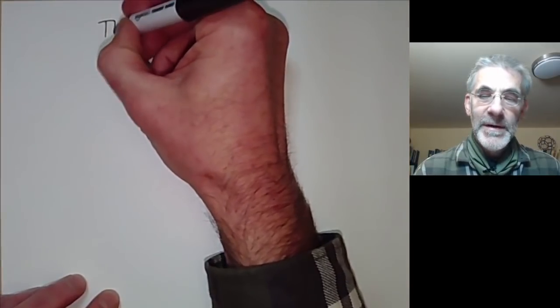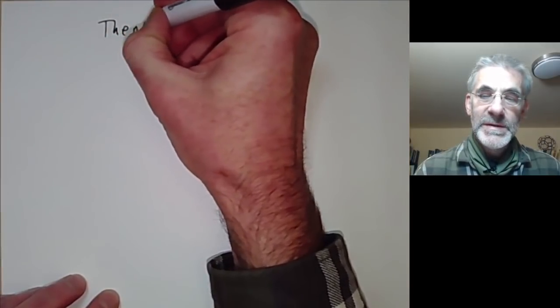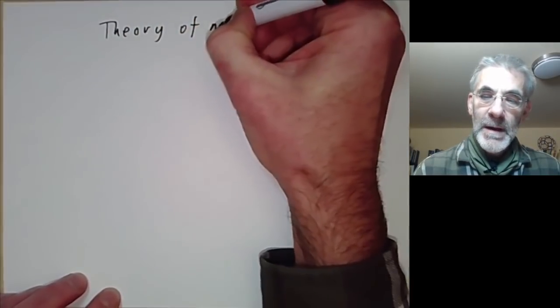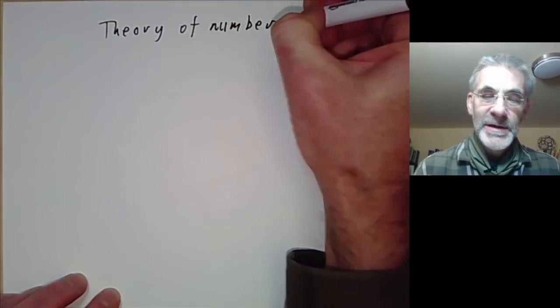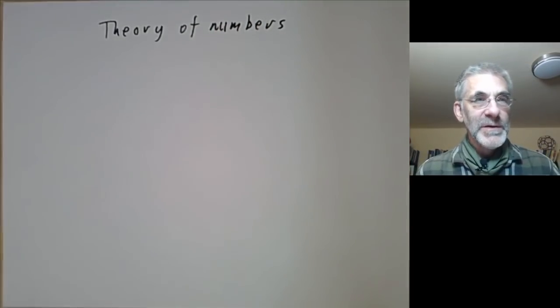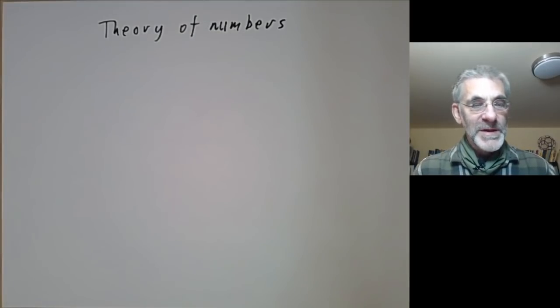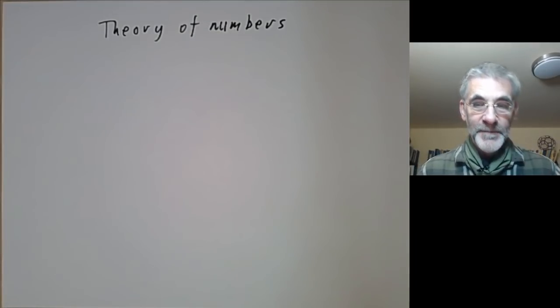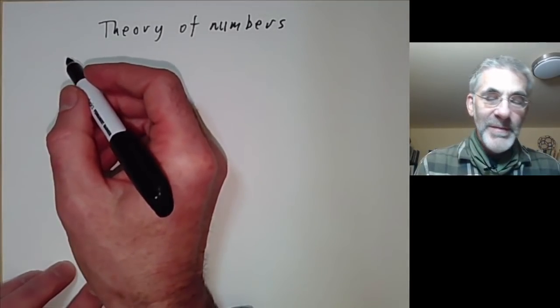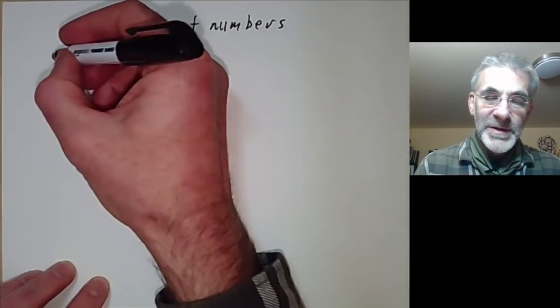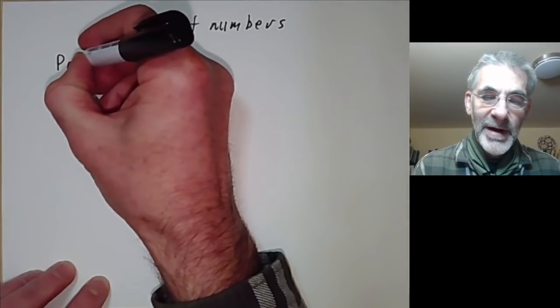This lecture is part of an online undergraduate course on the theory of numbers. This is just the introductory lecture, so I'll be giving an informal survey of some of the problems that occur in the theory of numbers. The theory of numbers is mostly about positive integers and in particular about primes.